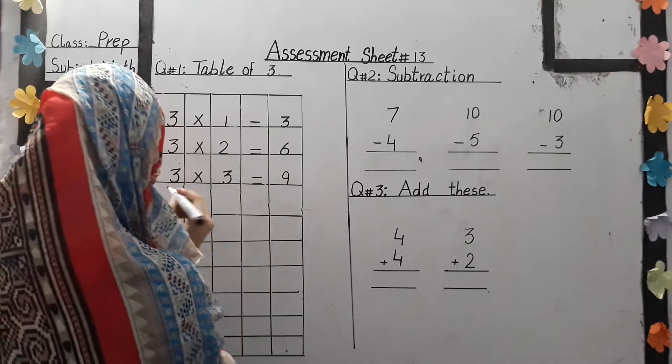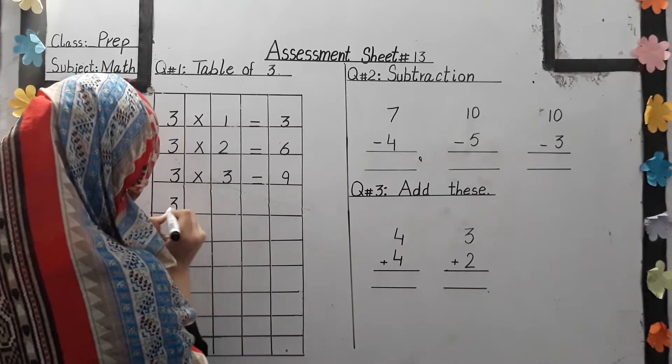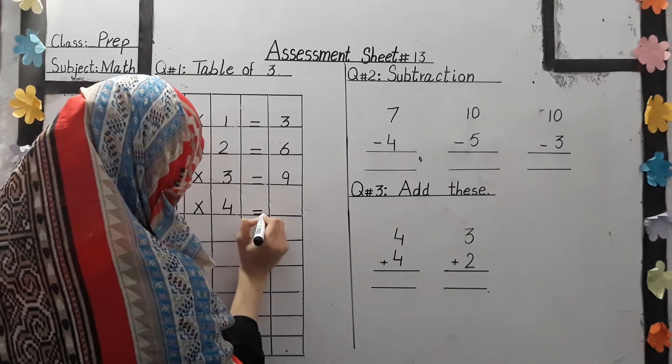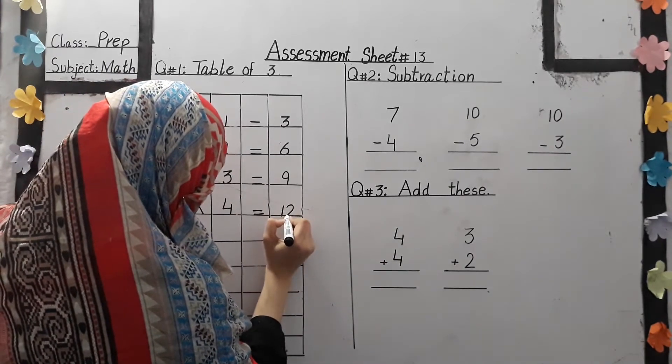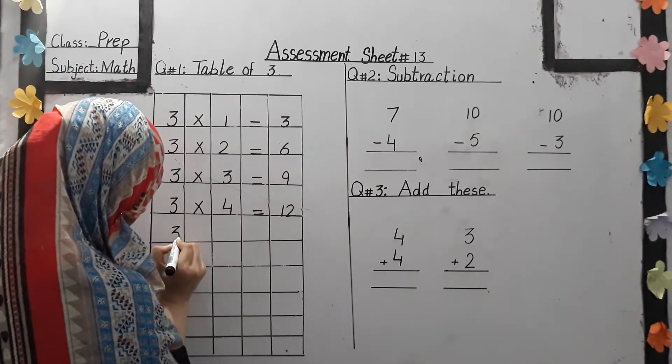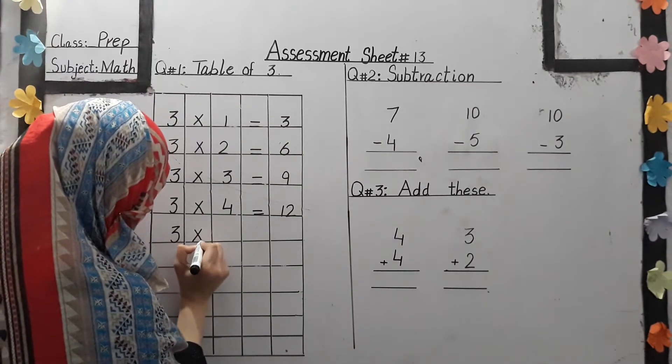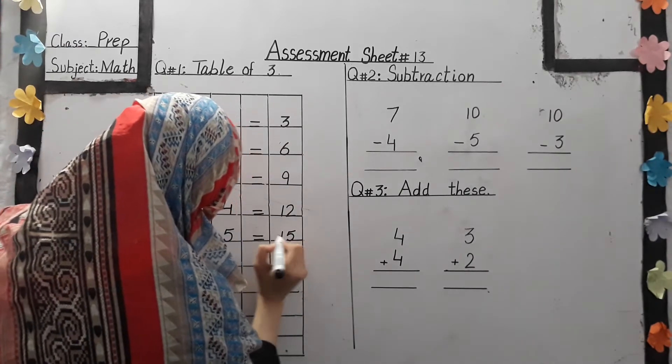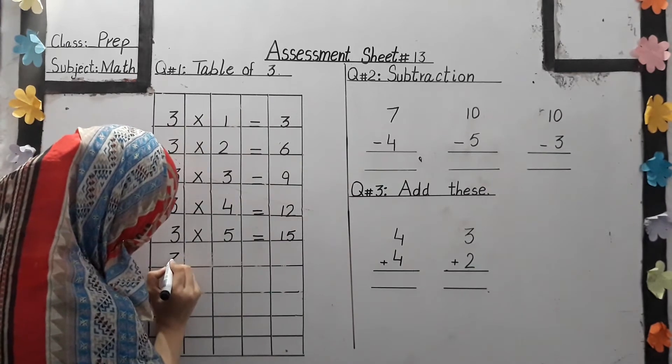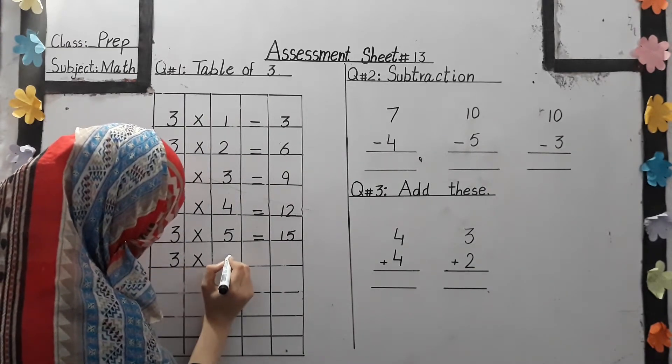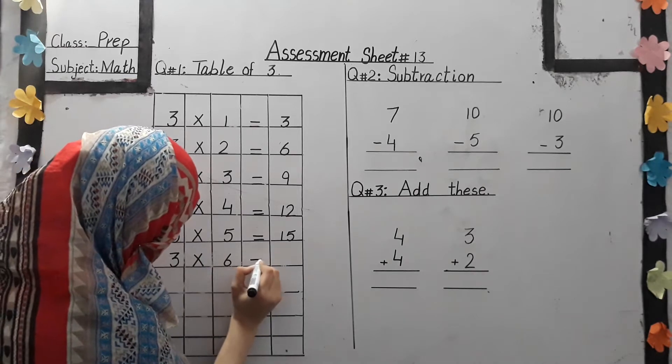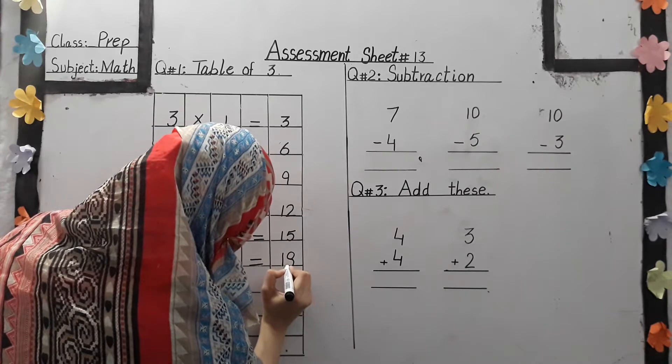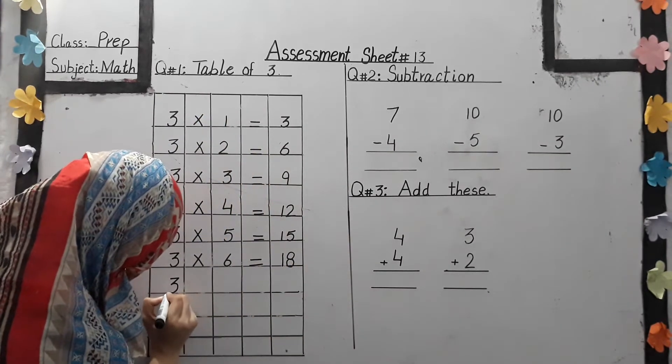Students, let's write the pattern. 3 fours are 12. 3 fives are 15. 3 sixes are 18.